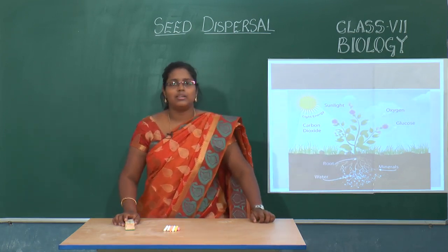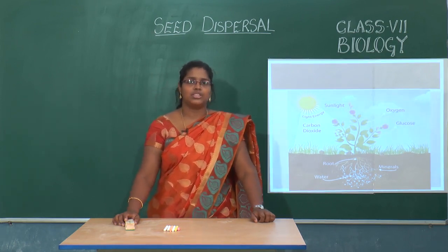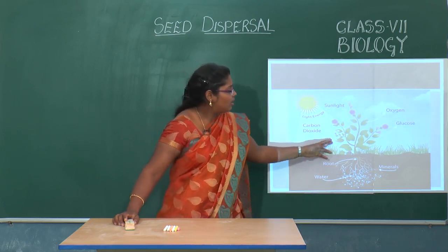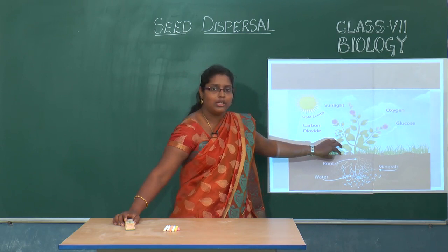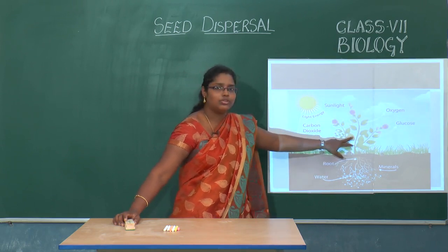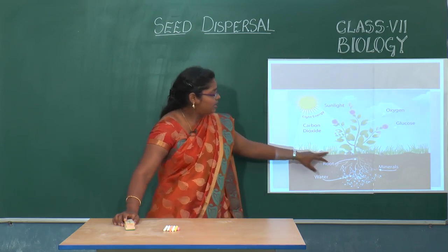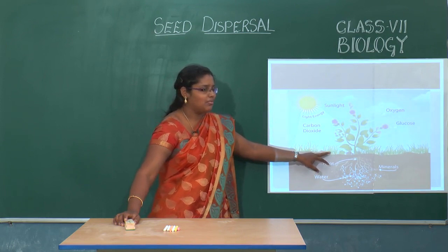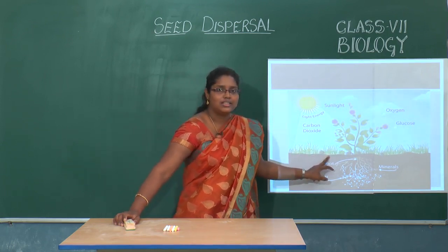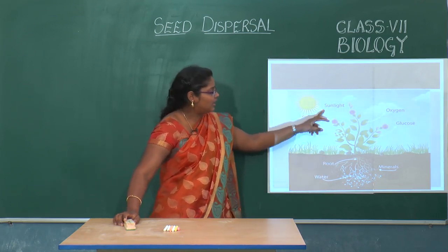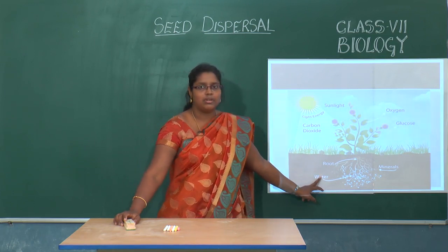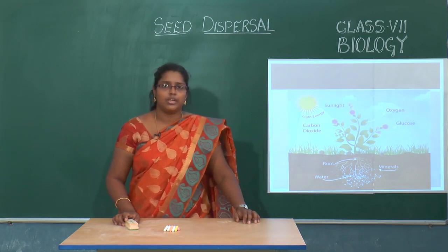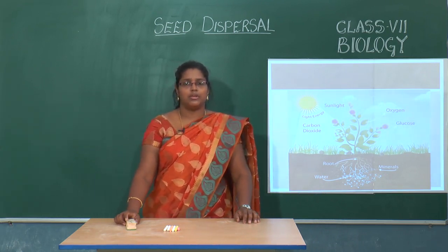Imagine if the plant did not have any mechanism to scatter its seeds — all the seeds would fall in the same soil, very close to the parent plant. When those seeds germinate, they start competing for sunlight, carbon dioxide, water, and mineral salts. To reduce this competition for nutrients, the seeds are dispersed.